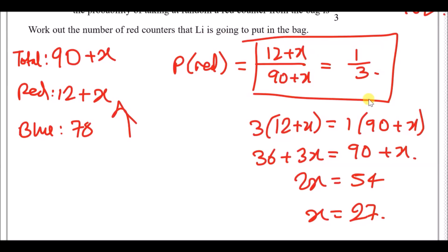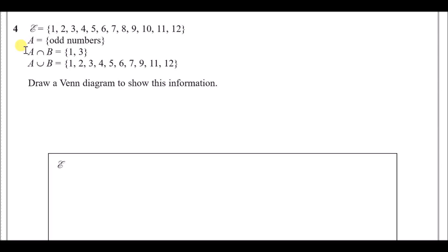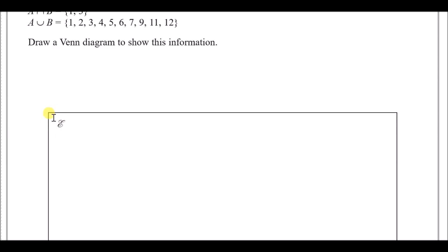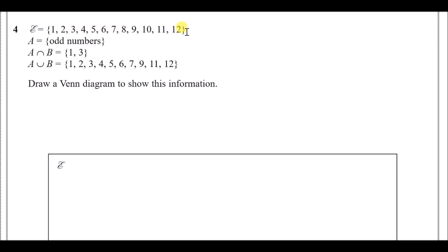Number 4: the universal set contains the 12 digits from 1 to 12. Set A contains the odd values: {1, 3, 5, 7, 9, 11}. Write down the actual numbers using curly brackets.